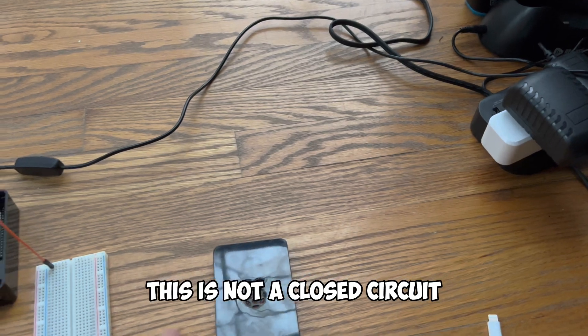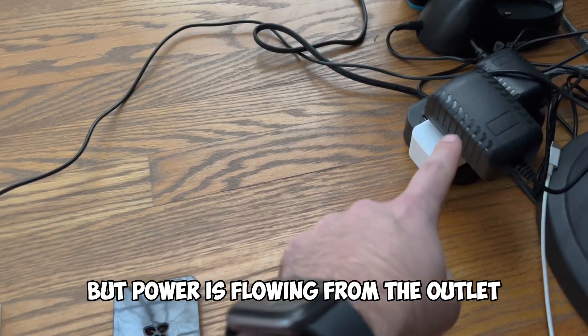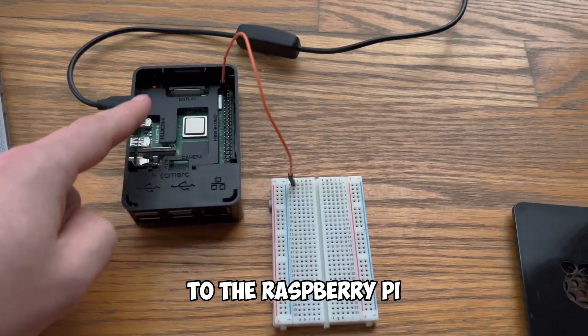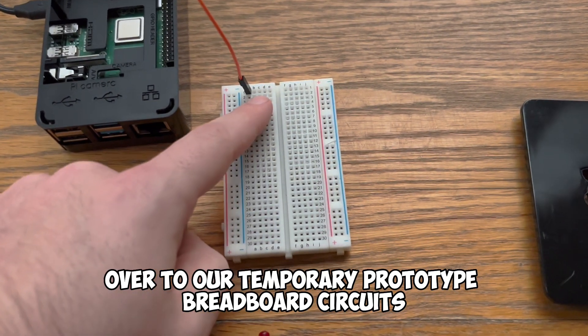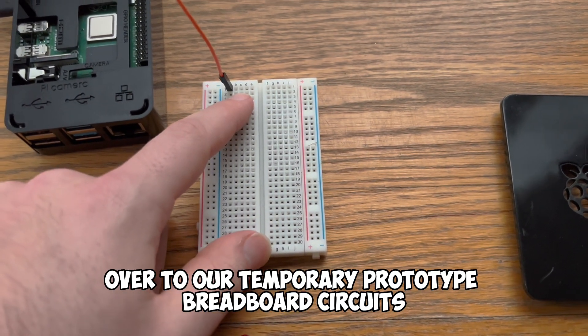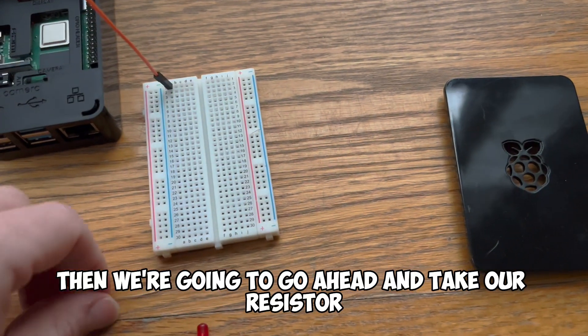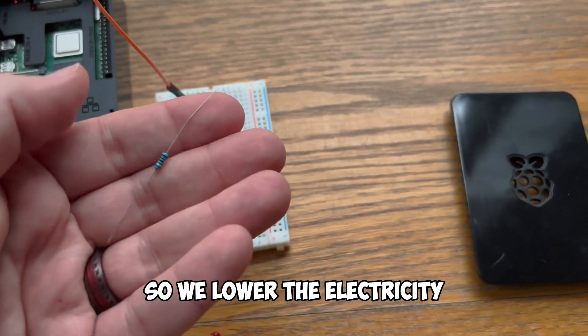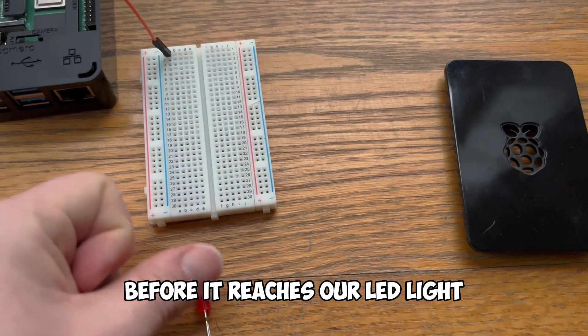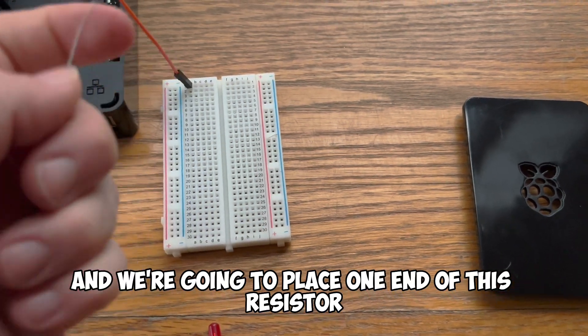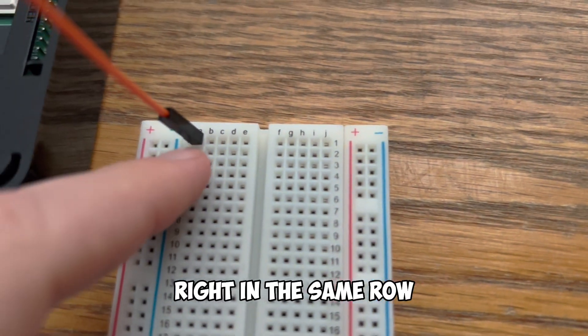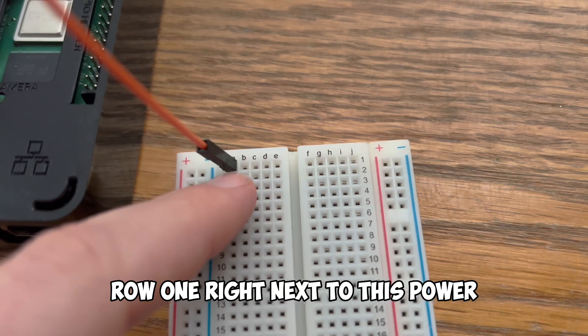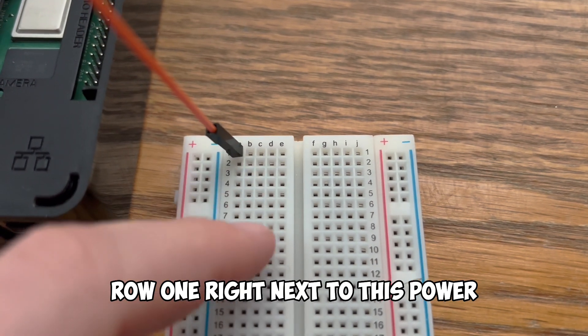So as of right now this is not a closed circuit but power is flowing from the outlet to the Raspberry Pi over to our temporary prototype breadboard circuits. Then we're going to go ahead and take our resistor so we lower the electricity before it reaches our LED light and we're going to place one end of this resistor right in the same row, row 1, right next to this power.